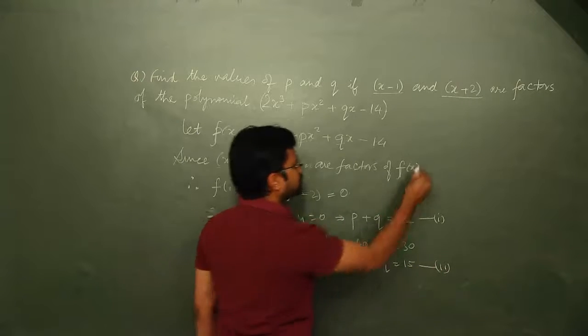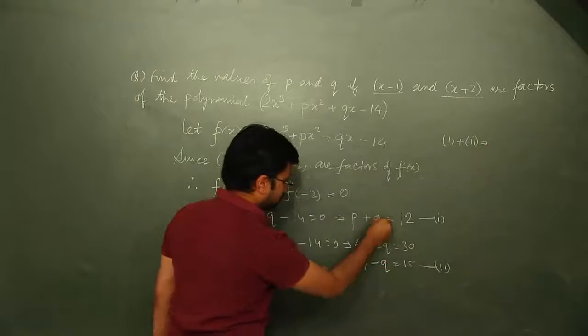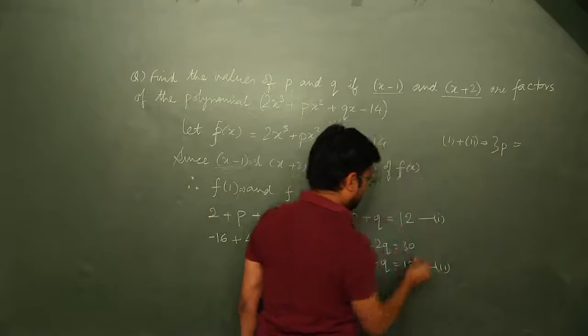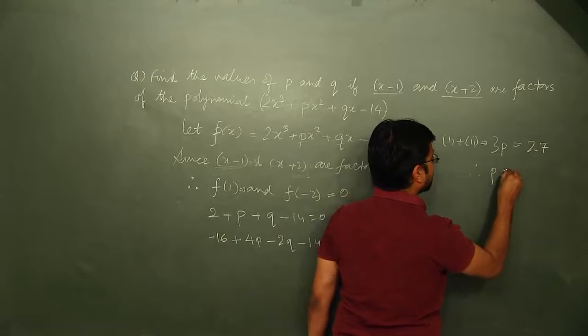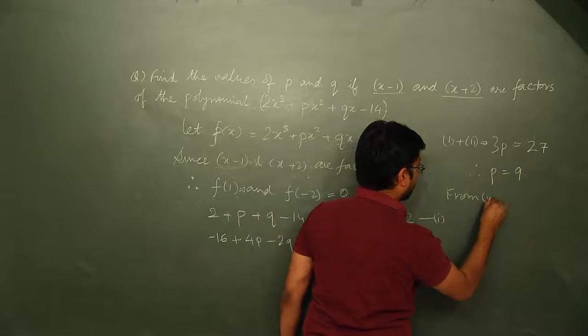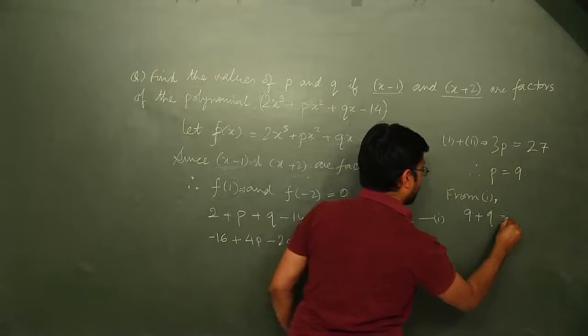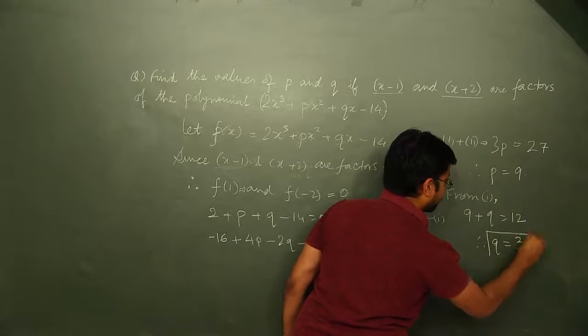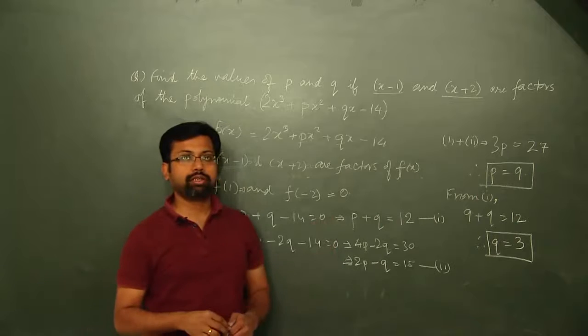If you add equations 1 and 2, q will cancel out and you get 3p equals 27. Therefore, p equals 9. From equation 1, 9 plus q equals 12, therefore q equals 12 minus 9, that is 3. These are the values of p and q that you obtain.